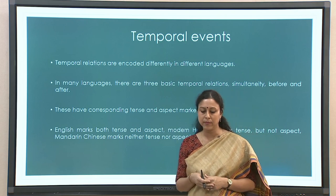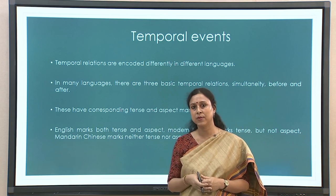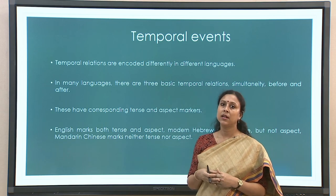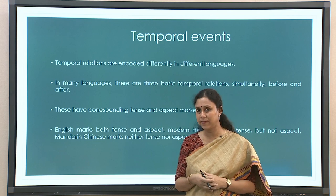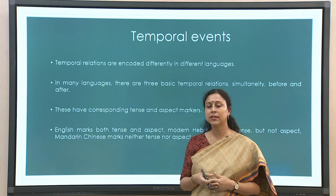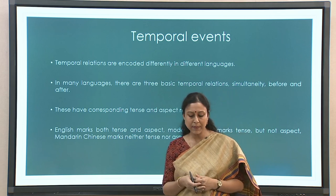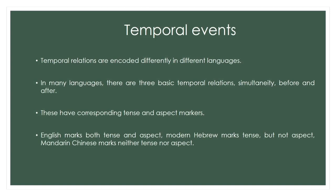Now we will move on to another grammatical component called temporal events. Temporal events primarily refer to tense and aspect markers in a language — it is a grammatical property. Languages differ widely in how they encode the information of time. Many will be familiar with the Hopi language example: in the heyday of linguistic determinism, Hopi was cited because it does not mark time on the verb phrase in the same way as English does, making it difficult to know the time of the event from the verb alone.